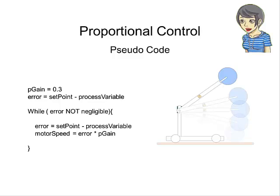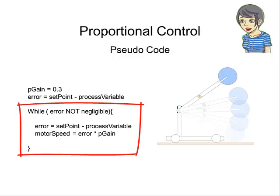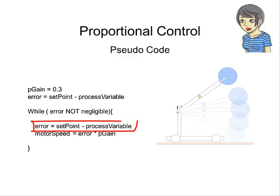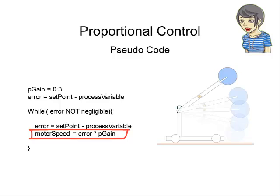The software implementation of proportional control is rather straightforward. You have a while loop, and in this while loop, you calculate the error by subtracting the process variable from the set point. You determine the speed of the motor by multiplying the error by the p-gain. And this continues until the error becomes negligible, meaning that this loop keeps going until the arm reaches its target.